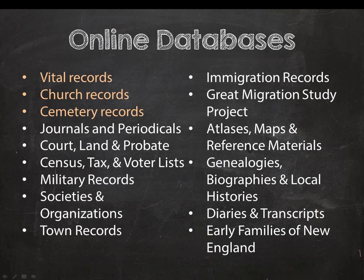AmericanAncestors.org features over 2,000 databases. We have scholarly journals, periodicals from New England, the Mid-Atlantic, and beyond. We have unique military records for all of the colonial wars, the Grand Lodge of Masons in Massachusetts membership database, and one-of-a-kind transcripts of diaries and much more. Another project unique to AmericanAncestors.org is our Early Families of New England study project, which provides sketches for mid to late 17th century immigrants. Today I'm going to focus on Bible record, church, and cemetery record databases we have online, and other resources available here at NEHGS in Boston.